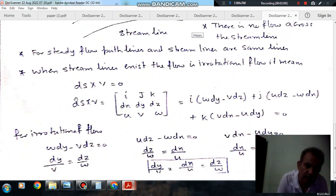So, for irrotational flow, because streamline is an irrotational flow, ds multiplied by v should be equal to 0. Because this is the vector product and this is the velocity vector. So, ds into v is equal to i, j, k, dx, dy, dz and u, v, w. Okay.